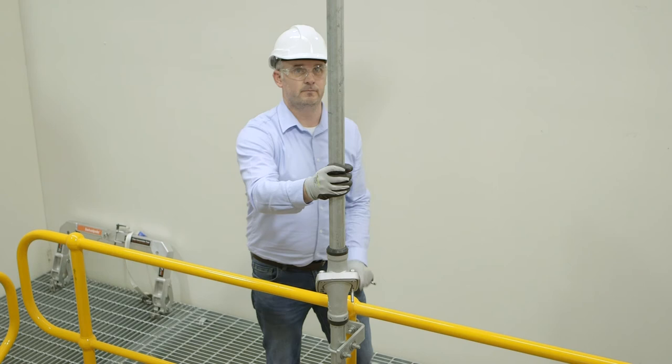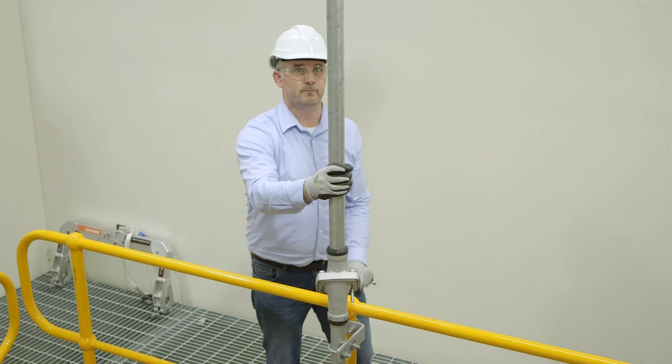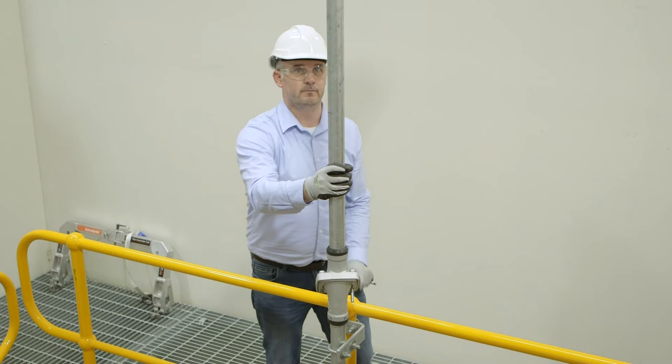Tighten bolts evenly and alternatively, whilst ensuring the pole top is nice and straight. Ensure that all grub screws and bolts are tightened fully.